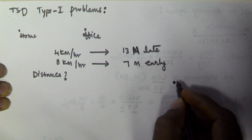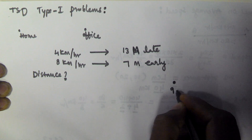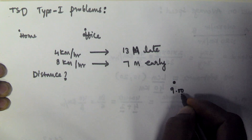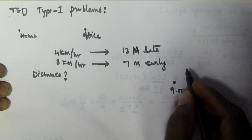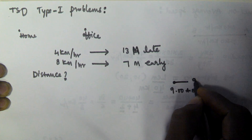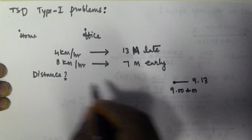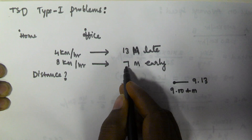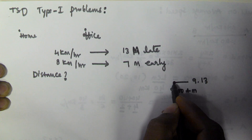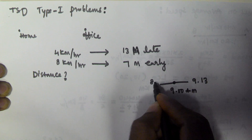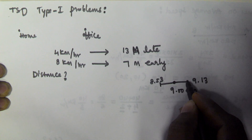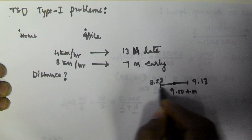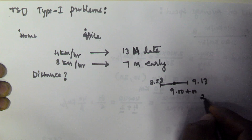For example, assume the right time to reach is 9 am. If he travelled with 4 km per hour, he will reach at 9:13. If he travels 8 km per hour, he reaches 7 minutes early, so he will reach at 8:53. What is the time difference? That is 20 minutes.